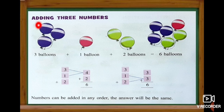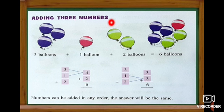Now we are going to learn A-D-D-I-N-G T-H-R-E-E N-U-M-B-E-R-S — adding three numbers. We learnt two numbers addition. Now we are going to learn three numbers addition.